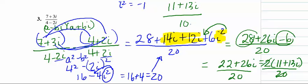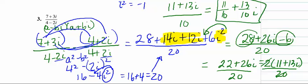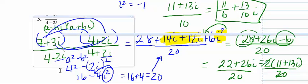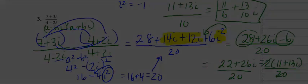Now we have to split the fraction up, split the quotient up, so that we have it in standard form. So we start with 11 over 10 plus 13 over 10i, and that would be the final answer, and it's also in standard form. Thank you.